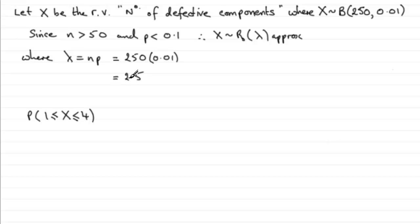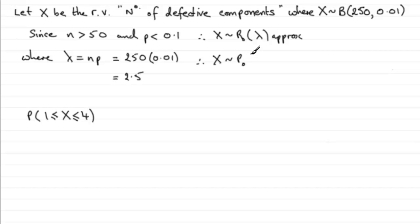There's also another condition you can use as a rule of thumb: if NP, the mean of a binomial, is less than 10 — which it is, 2.5 — that's another rule people sometimes use to approximate a binomial to a Poisson. So therefore, X is distributed approximately as a Poisson distribution with a mean of 2.5.